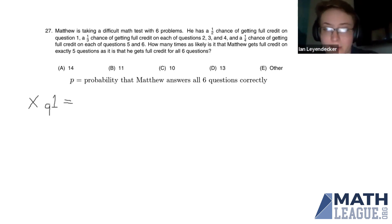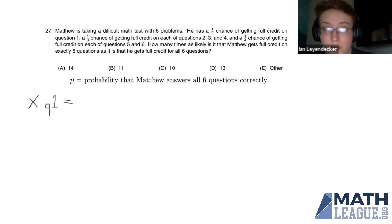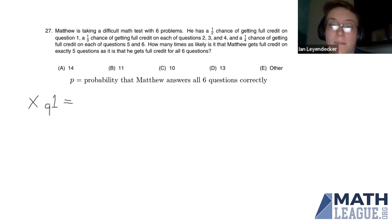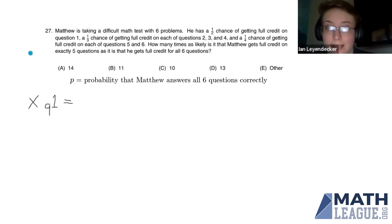Because of the differing probabilities of him getting each math problem right and the number of cases to calculate, trying to find the numerical probability of Matthew getting full credit on all six questions and on exactly five questions seems like way too much work, especially since we want to save time. However, we don't have to find the numerical probabilities — we just need to find how many times more likely it is for him to get exactly five questions right than all six.